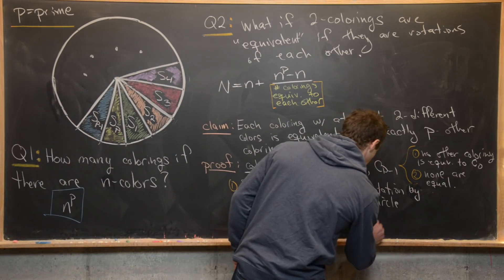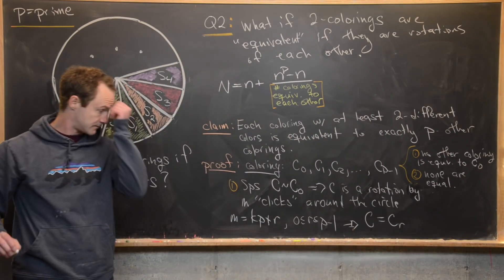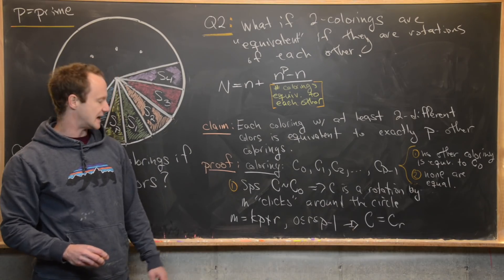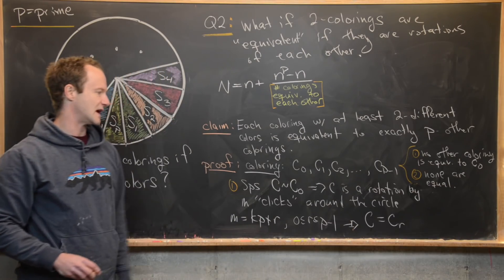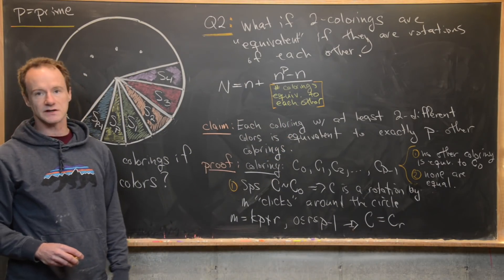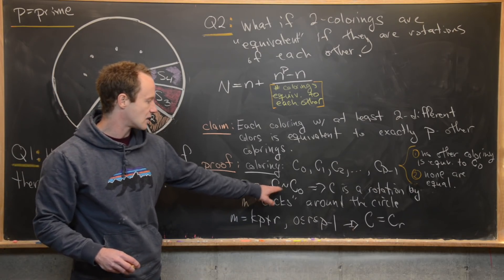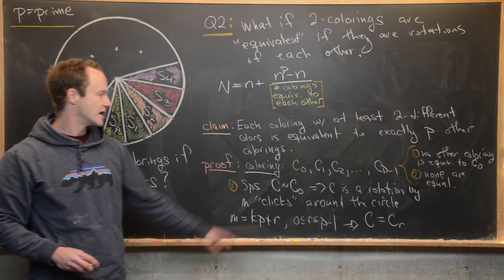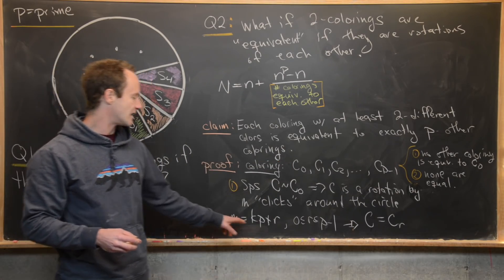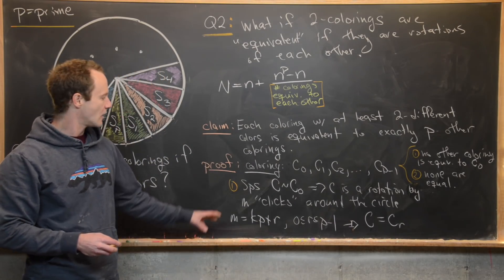With this setup, we see that our coloring equivalent to C0 is actually equal to C sub R, because rotating by P clicks is like not rotating at all, so we're left with just the remainder. This tells us that if a coloring is equivalent to C0, then it's on this list, at position R — the remainder when dividing the number of clicks by P.